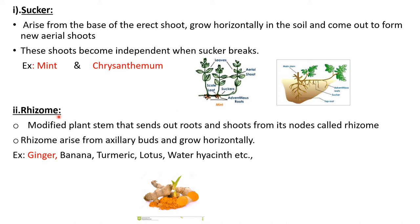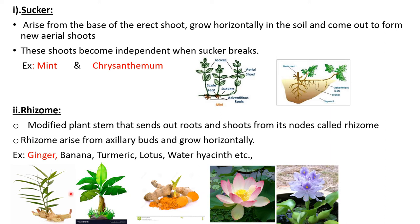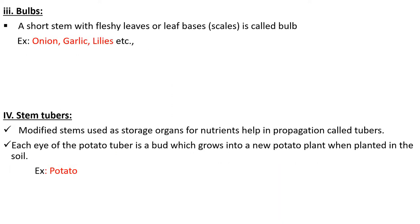The another one is rhizome — a modified plant stem that sends out roots and shoots from its nodes. Rhizomes arise from axillary buds and grow horizontally. You can see this type of vegetative propagation in ginger, banana, turmeric, lotus, and water lily. If you take a small piece of ginger or turmeric and plant it in the soil, after a few days you can observe the rising of a new plant from that small piece of the parent plant.